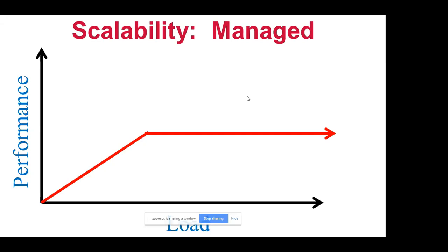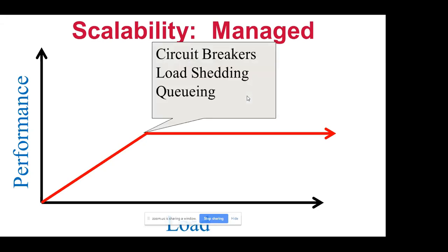These techniques — circuit breakers, load shedding, and deferred work queuing — help achieve a performance curve that flattens under high load rather than collapsing to zero. Condor doesn't always achieve this perfectly, but it is the consistent goal and philosophy. Avoiding the crash scenario is far preferable to chasing raw peak performance.